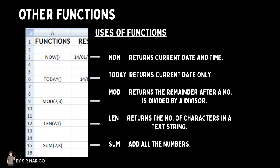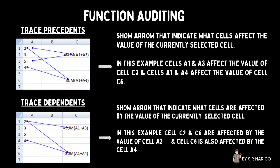Other functions include: NOW, which returns the current date and time; TODAY, which returns the current date only; MOD, which returns the remainder after a number is divided by a divisor; LEN, which returns the number of characters in a text string; and SUM, which adds all the numbers. For function auditing: Trace Precedents shows arrows indicating what cells affect the value of the currently selected cell. Trace Dependents shows arrows indicating what cells are affected by the value of the currently selected cell.